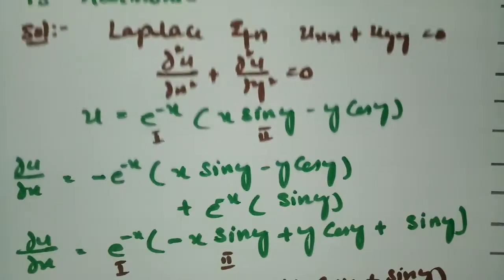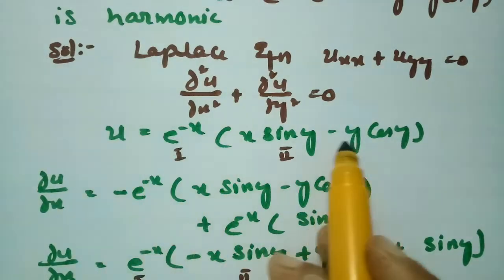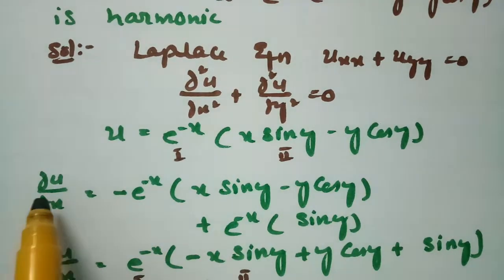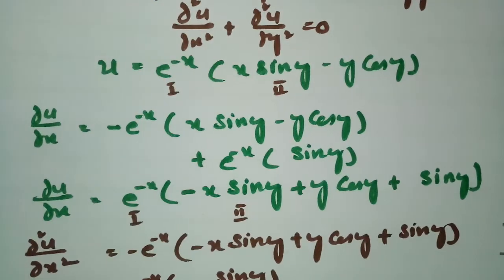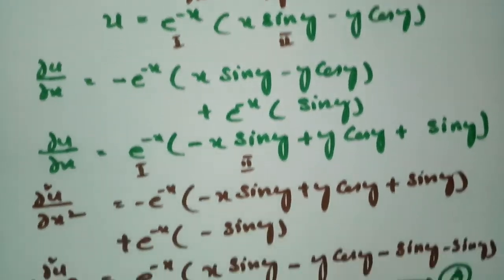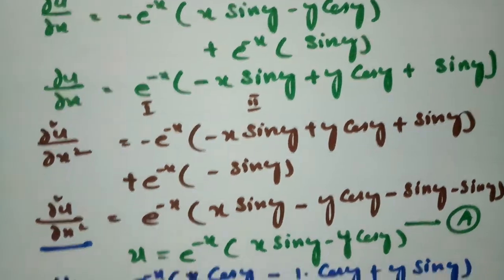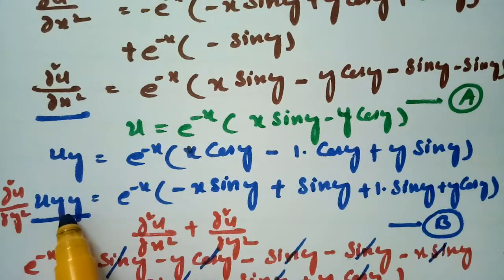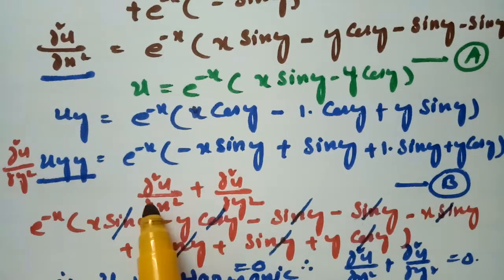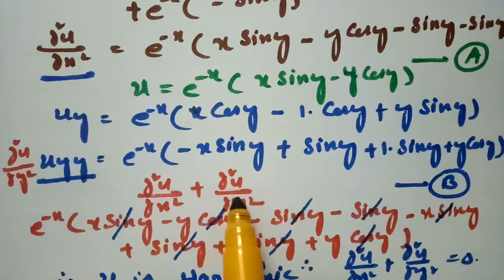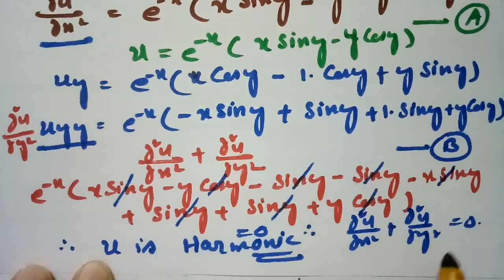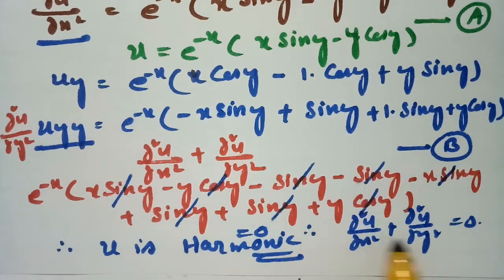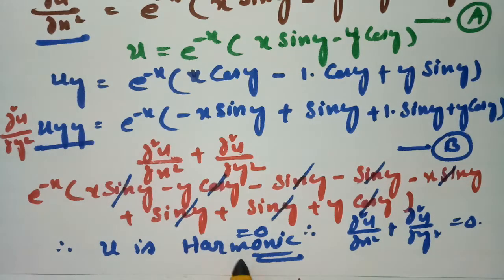To summarize: u is given, we make the double derivative with respect to x to get equation (a), and the double derivative with respect to y to get equation (b). Adding these two equations gives zero. Since u satisfies the Laplace equation, we conclude that u is a harmonic function.